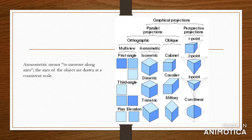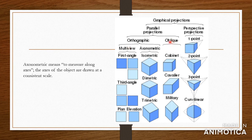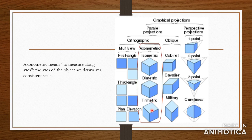Here I have the different graphical projections and I'm going to pull up my laser pointer so you can follow along with me. We've done multi-view drawings, which is first and third angle projection. We also did oblique drawings and questions on perspective drawings. We're going to go through axonometric drawings, and these are the three main types: the isometric drawing, the dimetric, and the trimetric drawing.